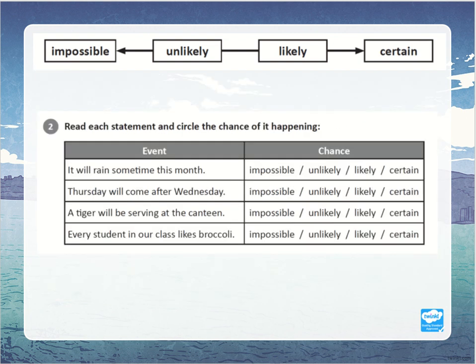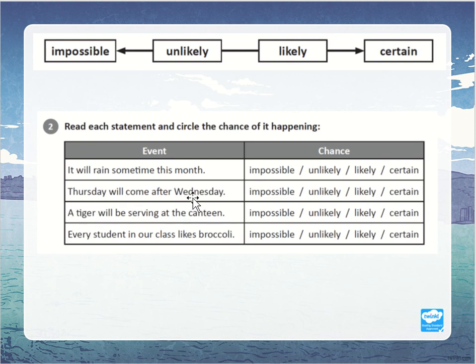The next question: read each statement and figure out the chance of it happening. What do you think the chance is that it will rain sometime this month — is it impossible, unlikely, likely, or certain? What's the chance that Thursday will come after Wednesday — impossible, unlikely, likely, or certain?